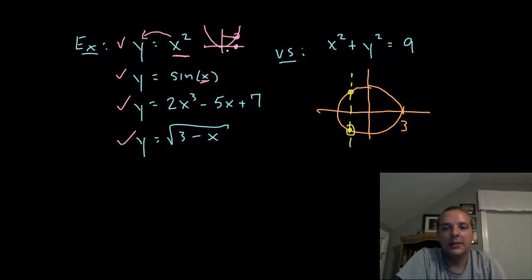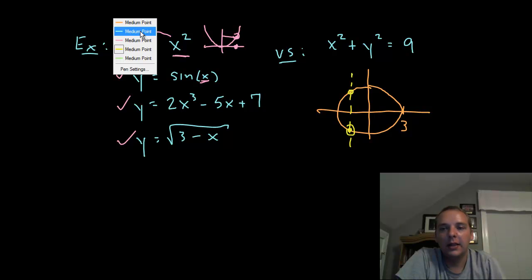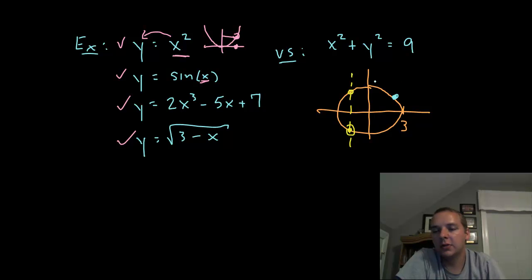So if you had a circle of radius 3, then obviously this does not pass the vertical line test. But that being said, are you telling me that if I picked a point somewhere around the circle, that its tangent line at that point doesn't have a slope? No, of course it does.